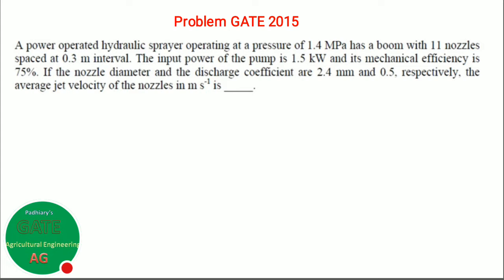There is a pump which delivers discharge at 1.4 MPa pressure. The total discharge is delivered at 11 nozzles. The first aim of the problem should be to find out the total discharge from the pump. Since the pump power is given as 1.5 kW and the mechanical efficiency is given as 75%, basically input power is given. So output power you can find out easily from mechanical efficiency, since the output power is directly related to discharging pressure.